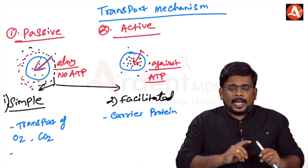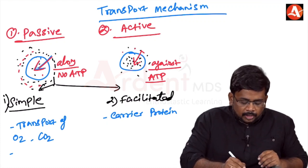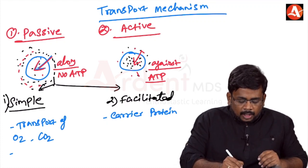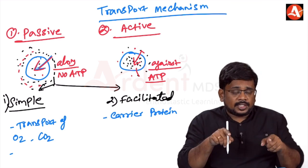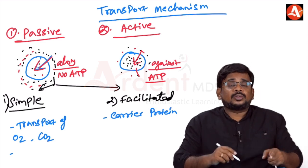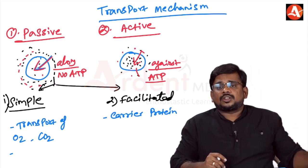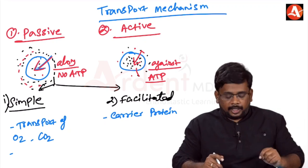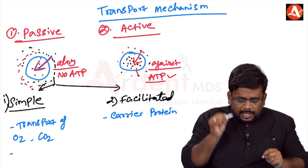Coming to active transport, the molecule or solute goes from lower concentration to higher concentration — against the concentration gradient. This needs energy in the form of ATP.